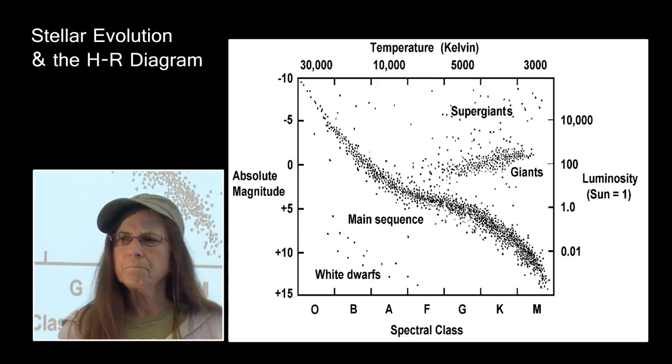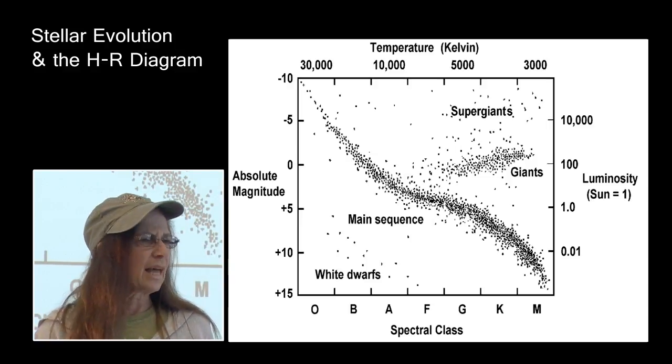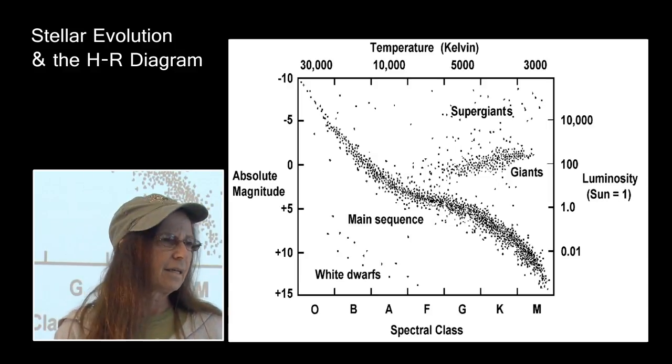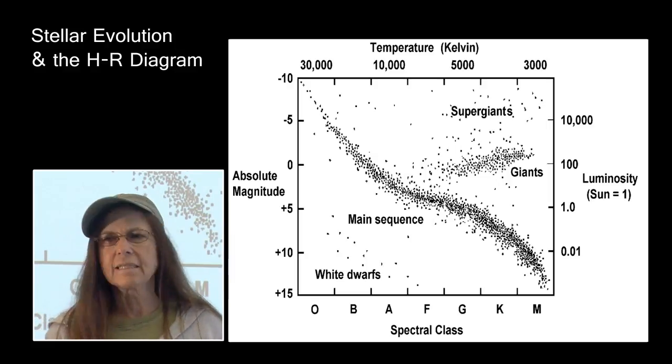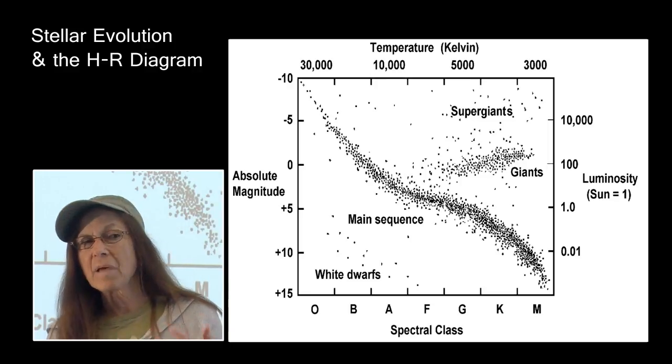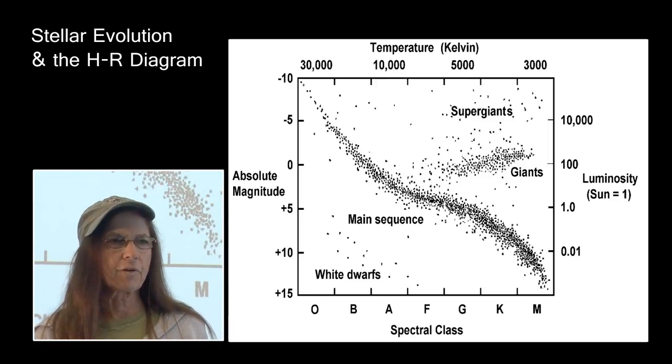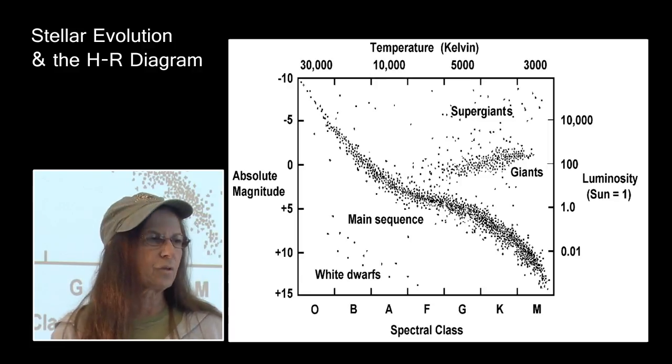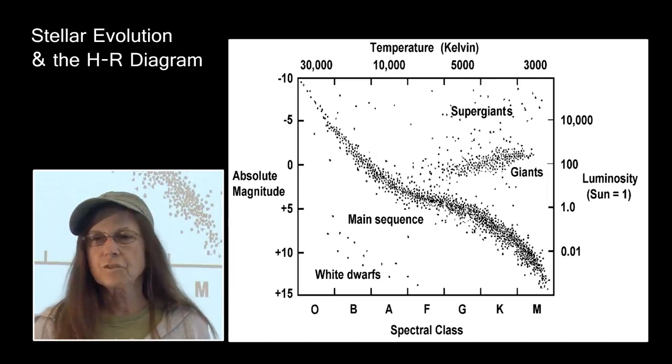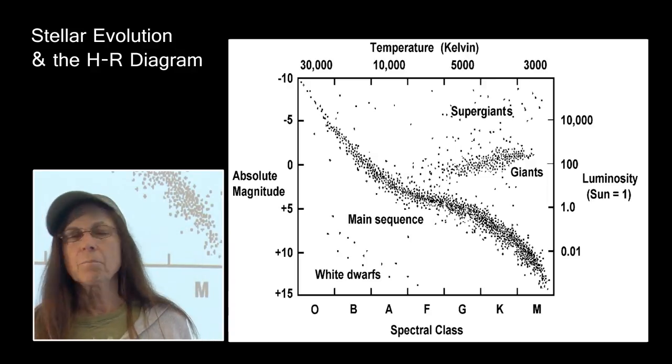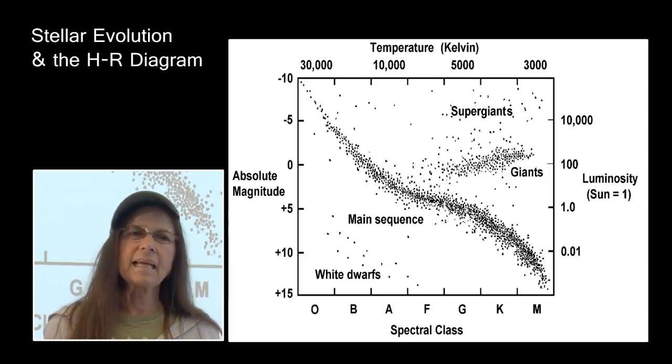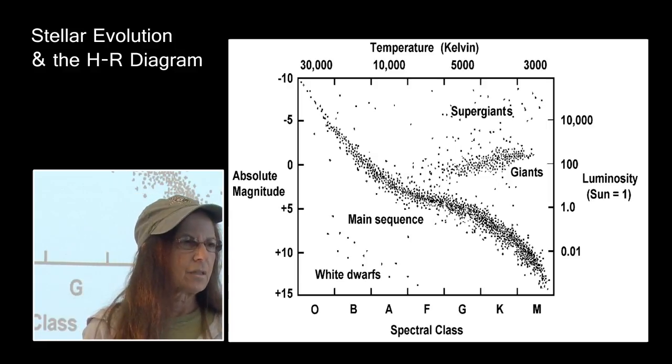So we have temperature. We have spectral class. Same thing. We have absolute magnitude and sometimes they use luminosity instead. Absolute magnitude is the intrinsic brightness of the star. How bright it actually is internally. Not its apparent brightness or how bright it appears to be from here. But its actual intrinsic brightness. Or sometimes it is plotted as luminosity. That is a totally arbitrary scale. The Sun is one solar luminosity and everything else is more or less luminous than the Sun.